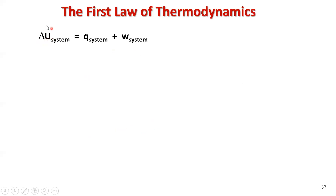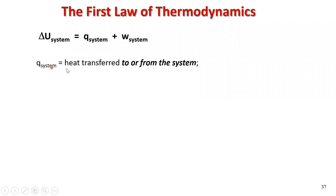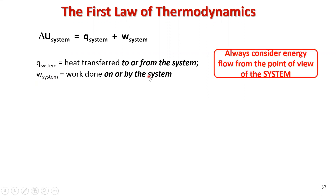Here's our equation: the change in the internal energy equals the heat that's gained or lost, plus the work that's done on or by the system. Q for the system is the heat transferred to or from the system. W is the work done on or by the system. We're always going to consider energy changes and energy flow in terms of the system, and oftentimes that becomes confusing because we typically measure the surroundings.